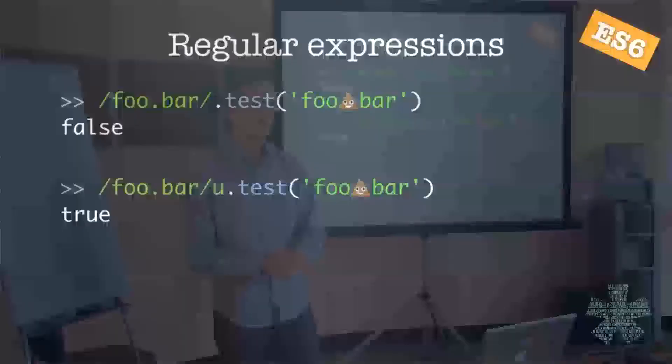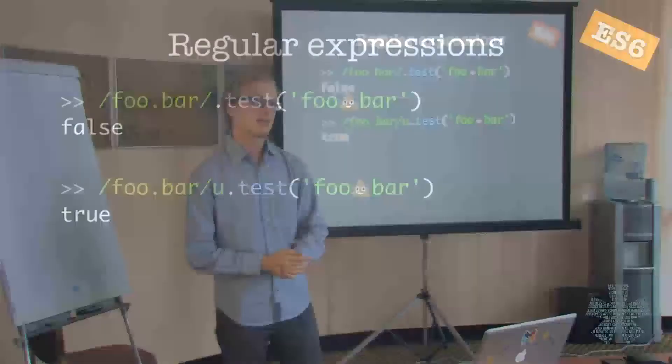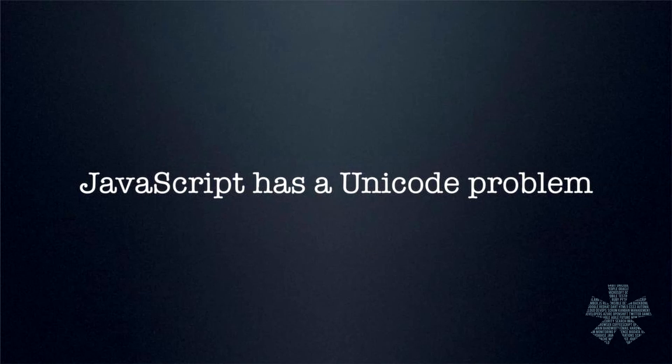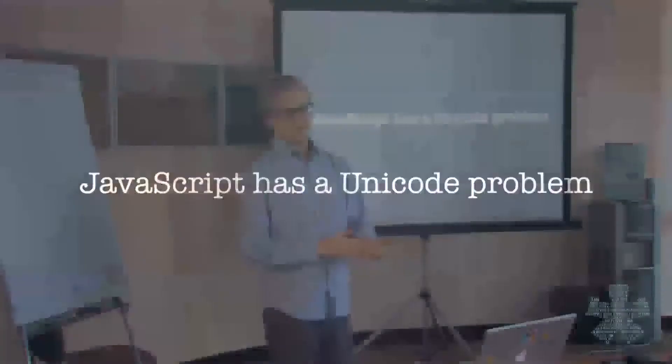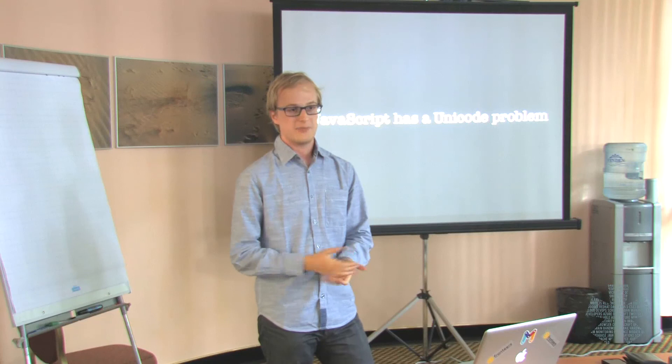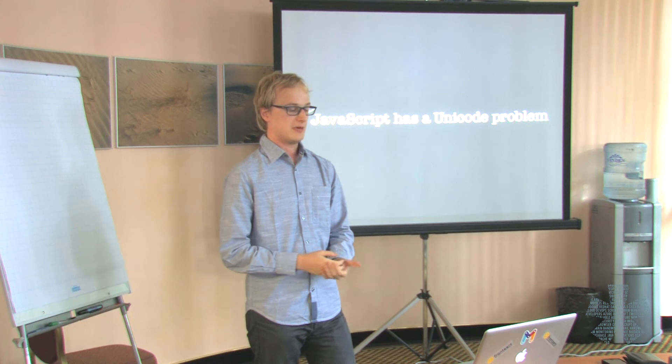And finally, ECMAScript 6 will make all this much easier. It will introduce a new flag for regular expressions — the U flag stands for Unicode — and if you use that, the dot operator will match whole symbols and won't match separate surrogate halves individually. So I think it's pretty clear that JavaScript has a Unicode problem, but rather than complain about it like Jay-Z did, I think we should all be working around these issues. The good news is that we have ECMAScript 6 on our side, so things are definitely looking up. Thank you for your attention.